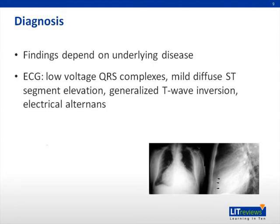An electrocardiogram is often informative. Low voltage of the QRS complexes results from a damping effect of the fluid. Pressure on the myocardium leads to tissue injury that may cause diffuse ST segment elevation. Generalized T wave inversion results from inflammation and tends to follow ST segment changes. Electrical alternans is demonstrated by variable QRS amplitude. Note that the electrocardiogram may be normal, especially in the early acute phase.